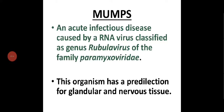Welcome back. We'll start with a new topic: mumps, an acute infectious disease caused by an RNA virus classified as genus Rubulavirus of the family Paramyxoviridae. Mumps is a viral disease caused by this RNA virus belonging to the genus Rubulavirus of the family Paramyxoviridae.